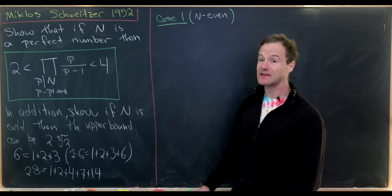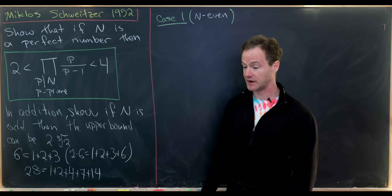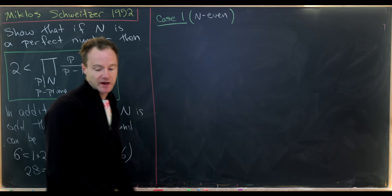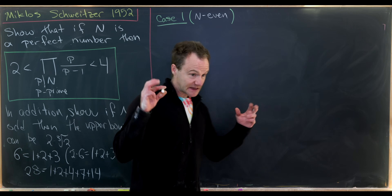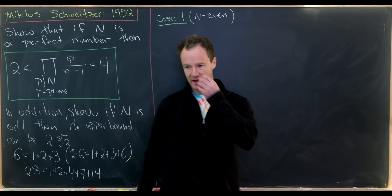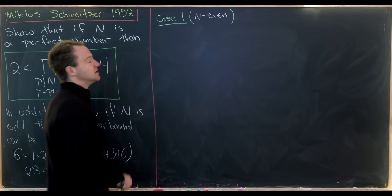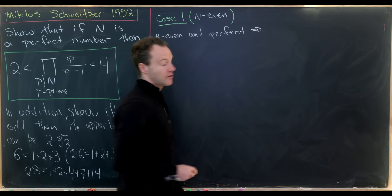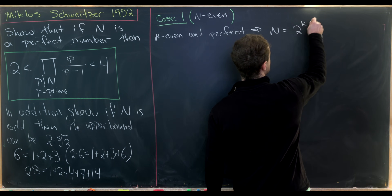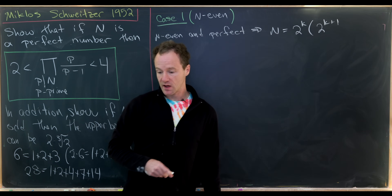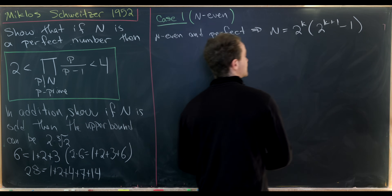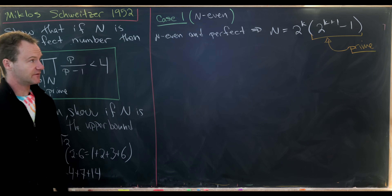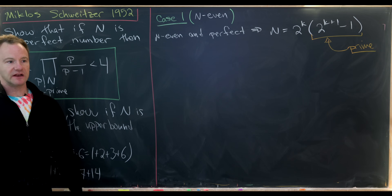I'm going to look at the even case first, which is probably the only case, but that's a big conjecture. We'll look at the even case because it's actually quite simple, and then tackle the odd version. Here's something very well known — I think it's legal to use this result in this undergraduate math contest. If N is even and perfect, then N can be written as 2 to the k times (2 to the k+1 minus 1), and furthermore, this factor 2 to the k+1 minus 1 is a prime. Primes of that form are called Mersenne primes, and it's unknown if there are infinitely many.